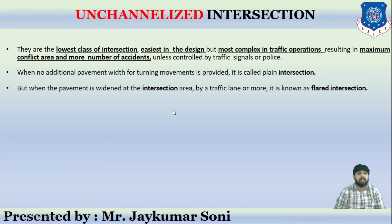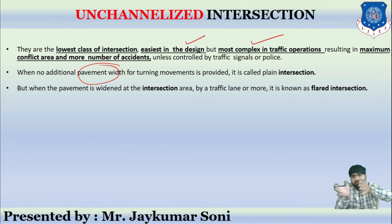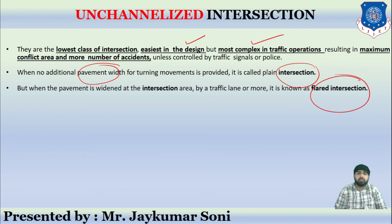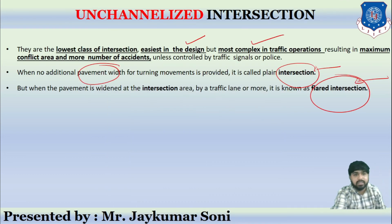Unchannelized intersections are the lowest class of intersection. They are the easiest in design but most complex in traffic operation. If no additional pavement width is provided for the turning movement, it is called as a plain intersection. If the pavement width is provided for the turning of vehicles, then it is called as a flared intersection. This is the unchannelized intersection — the easiest and lowest class.